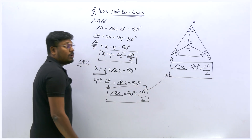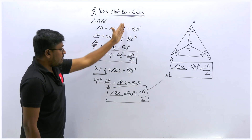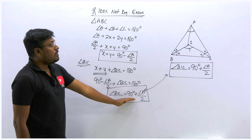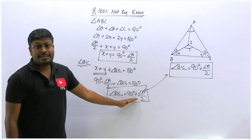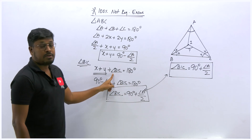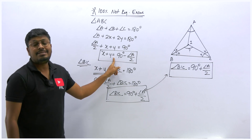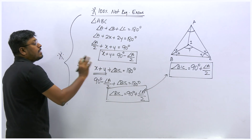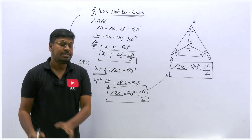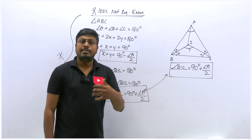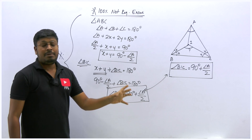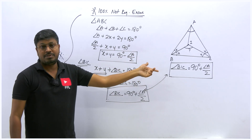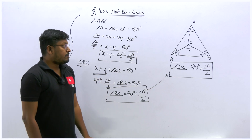That completes the proof — which is what we studied in school. The key point I wanted to show is why different books may use different intermediate expressions. For your competitive exam, just use the final formula directly: angle BIC = 90° + (A/2). I'll now show you in which questions to apply this formula and when not to.